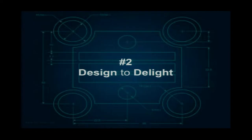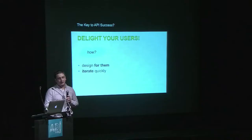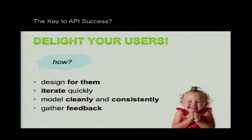The next pattern is design to delight. If your API is your product and the way developers consume it, you really need to delight them and make it a great experience. You can design for them — that's what we just talked about with creating a good contract. You can iterate quickly, obtaining feedback from them. The more you engage with developers, the more feedback you get, the more you can iterate, and the better experience you give to your API consumers, generating adoption.